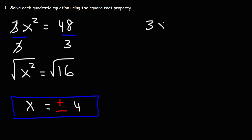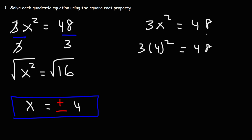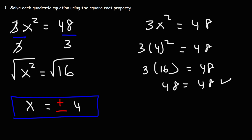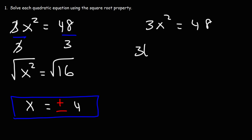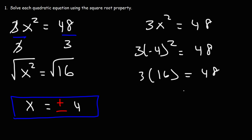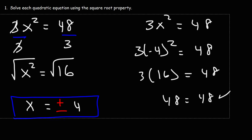To check the work, you can plug your answer into the original expression. If we plug in positive 4, it's going to work out — 4 squared is 16, and 3 times 16 is 48. If we plug in negative 4, it will give us the same answer, because negative 4 times negative 4 is still positive 16, and 3 times 16 is 48. So we have two possible answers: x can be positive 4 or negative 4.